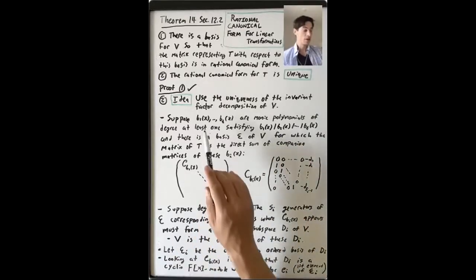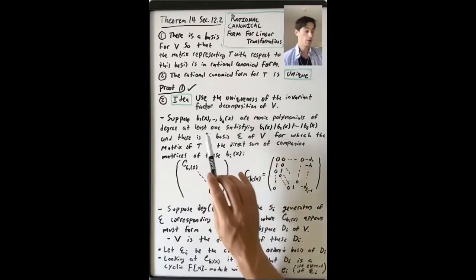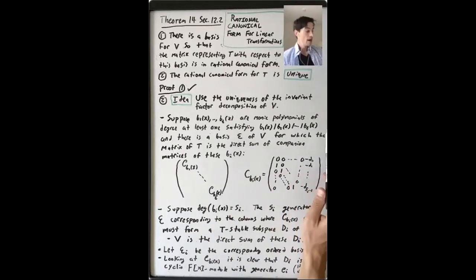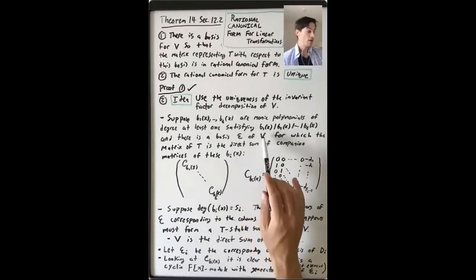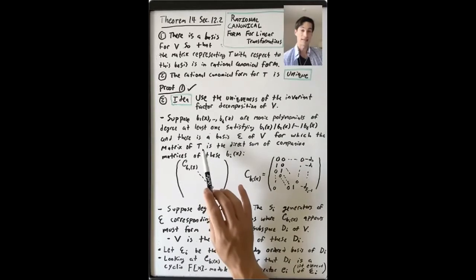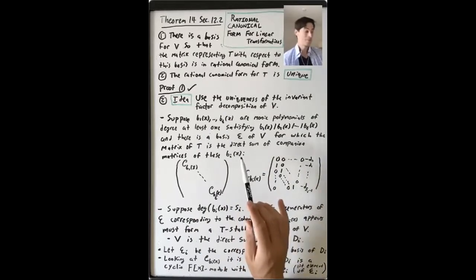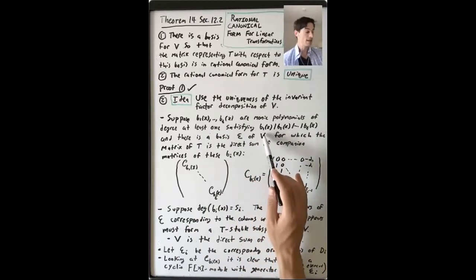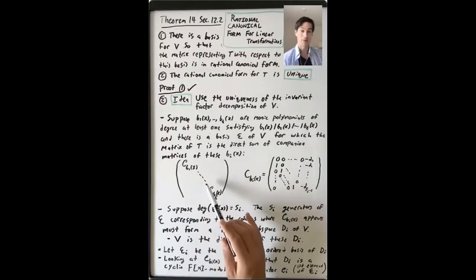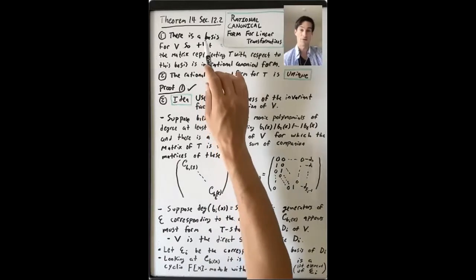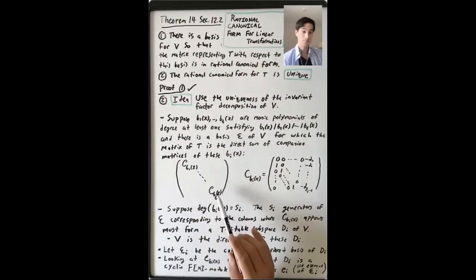We suppose that B1 up through Bt are monic polynomials of degree at least one, satisfying the divisibility relations B1 divides B2, B2 divides B3, and so on. And that there is a basis E of V for which the matrix of T with respect to this basis is the direct sum of the companion matrices of these polynomials. So we already have the decomposition in terms of CA1 up through CAM, and now we have another one. Our goal is to show that T equals M and that each AI equals each BI.